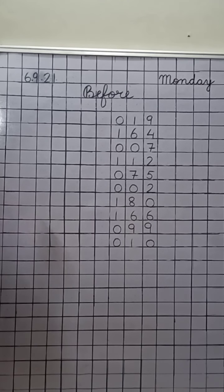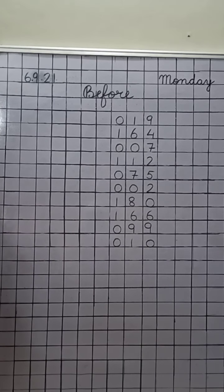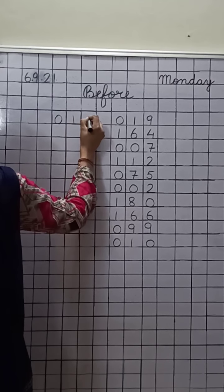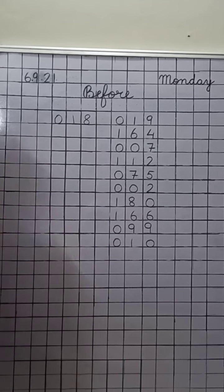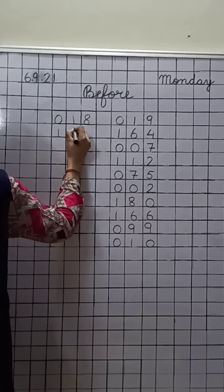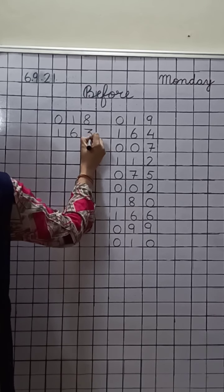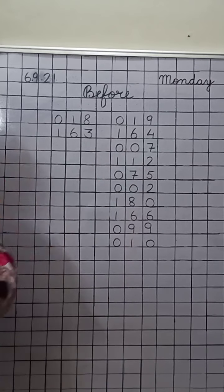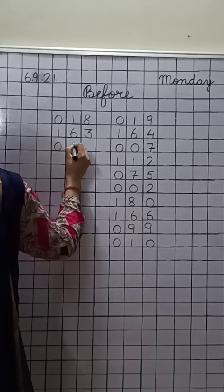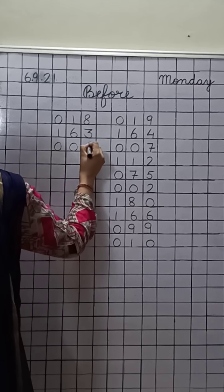Now tell me, what comes before nineteen? Eighteen. Yes, so write down here: eighteen. Before one hundred sixty four — one hundred sixty three. Good, write down one hundred sixty three. Before only seven — only six. Yes, write down only six.